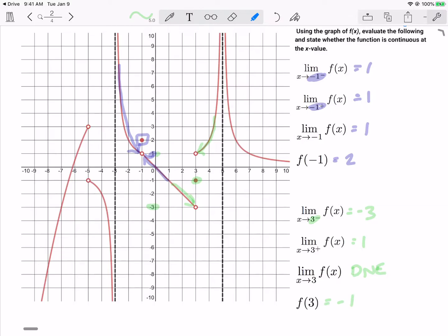The function is actually filled in at a y value of negative 1. This one would not be continuous because the limits from the left and the right do not equal the function's value. So far we've got no continuous points at x equals negative 5, negative 3, negative 1, or positive 3.